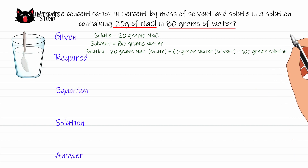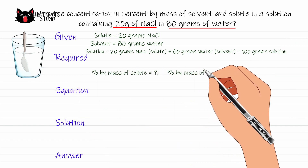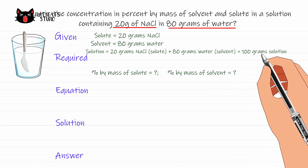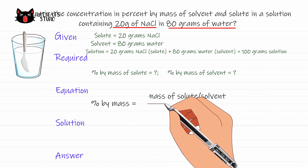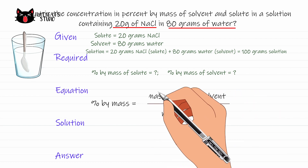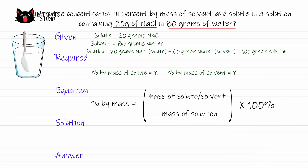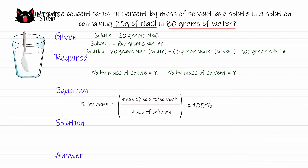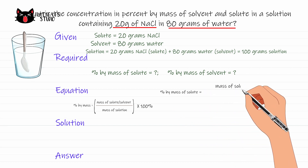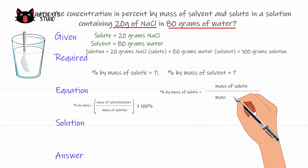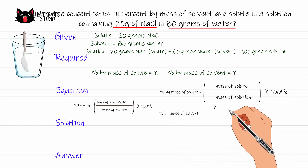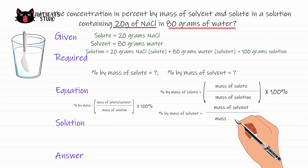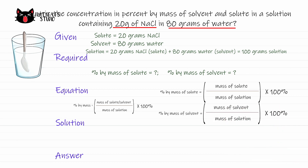We are required to find the concentrations of the solute and solvent in percent by mass. The formulas are: percent by mass of solute equals mass of solute over mass of solution times 100%; and percent by mass of solvent equals mass of solvent over mass of solution times 100%. Let's find the percent by mass of solute first.